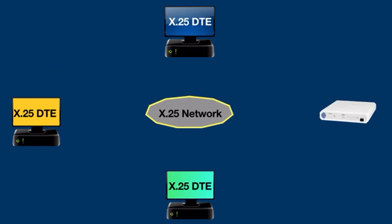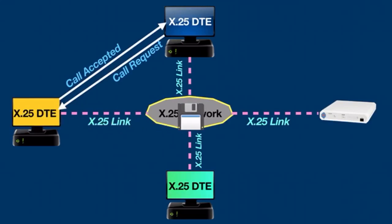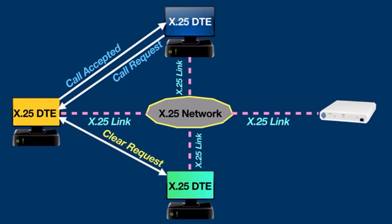To establish a connection between devices, the calling DTE sends a call request packet which includes the address of the remote DTE to be contacted. The destination DTE decides whether or not to accept the call; acceptance is made by issuing a call accepted packet. Once the originating DTE receives the call accepted packet, a virtual circuit is established and data transfer may take place. When either DTE wishes to terminate the call, a clear request packet is sent to the remote DTE, which responds with a clear confirmation packet.